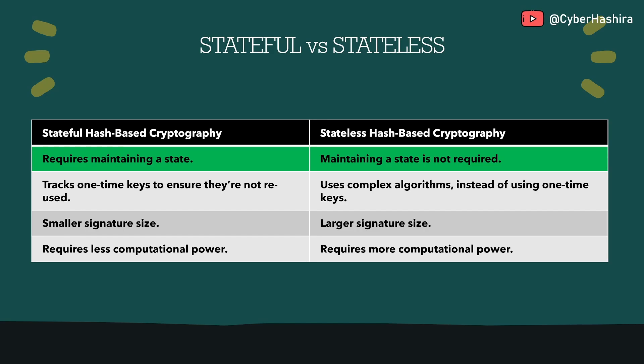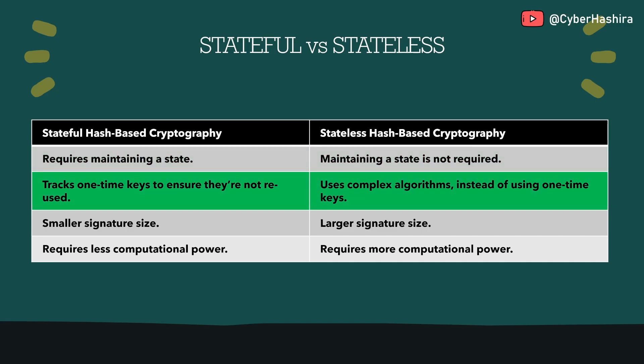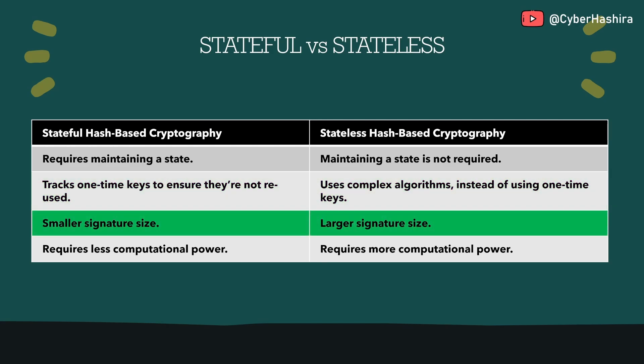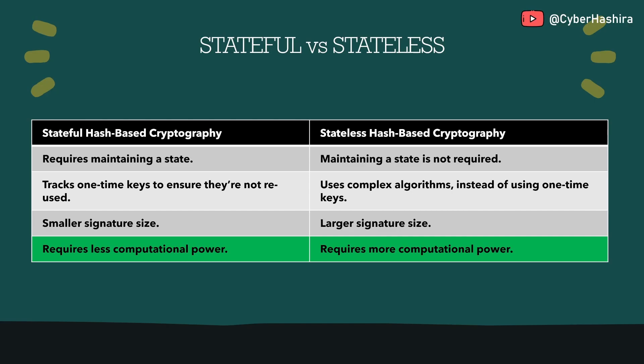Stateful hash-based cryptography requires maintaining the state of a Merkle tree to track key usage, whereas stateless hash-based cryptography eliminates the need for such state management. To prevent key reuse, a stateful hash method requires state management by keeping track of one-time signature keys that have been used. A stateless hash method does not require maintaining a state because it dynamically derives keys and ensures security without tracking key usage. Stateful hash methods produce smaller signatures and are computationally more efficient compared to stateless hash-based methods. Stateful methods can also generate and verify digital signatures faster than stateless hash methods.